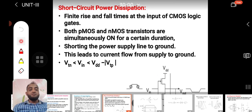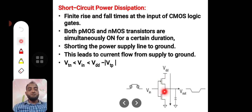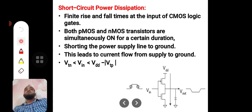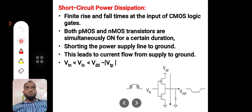Because both devices are in saturation, there is a path for the supply voltage to short circuit directly to ground through the devices. Even though this happens for a very short time, there is still a measurable amount of power dissipation occurring.